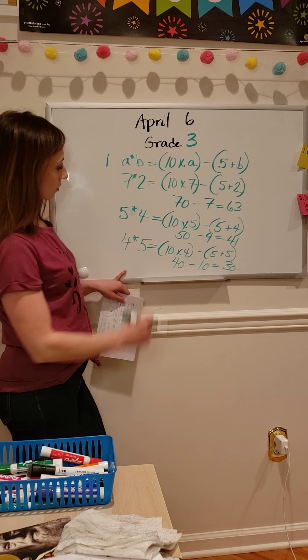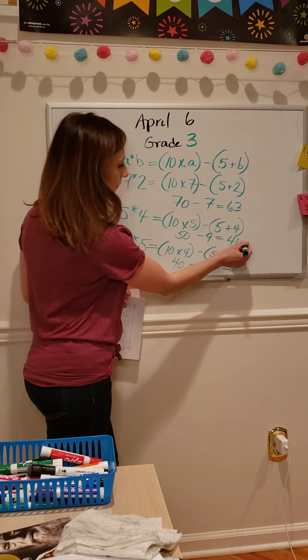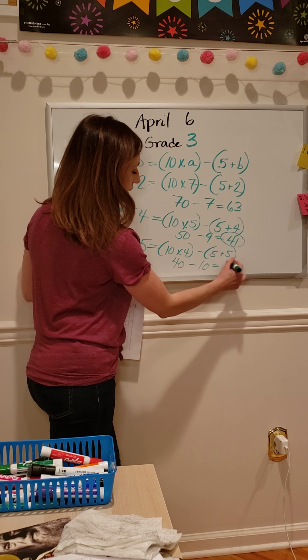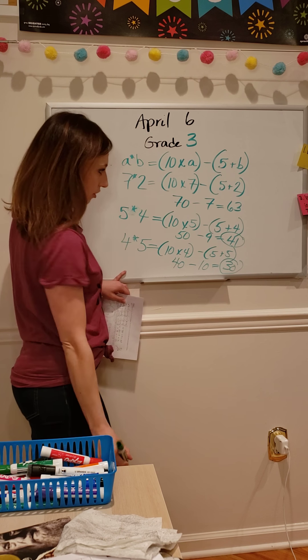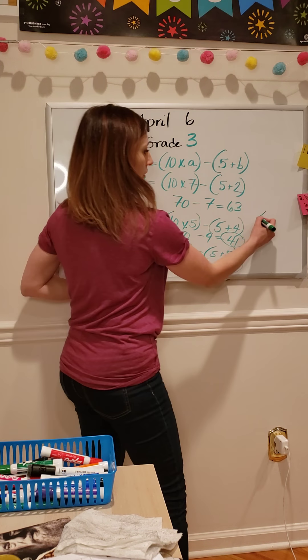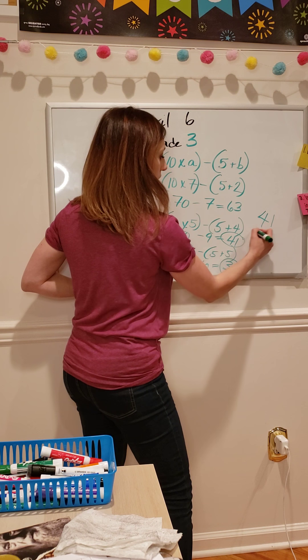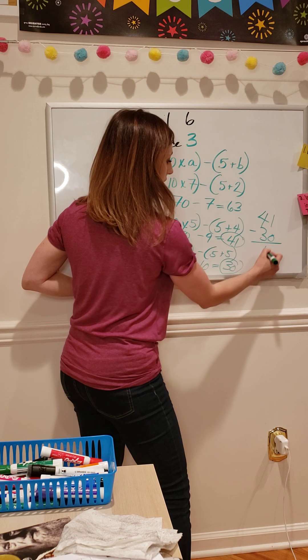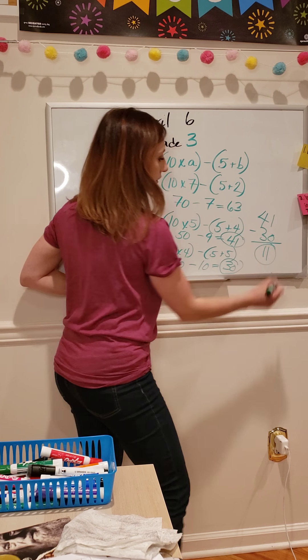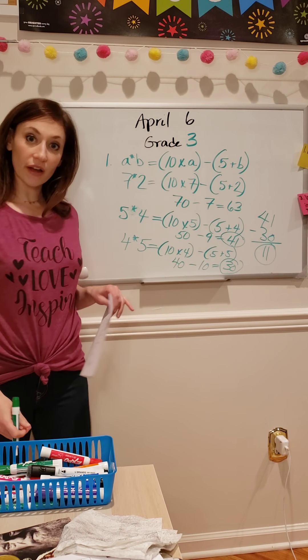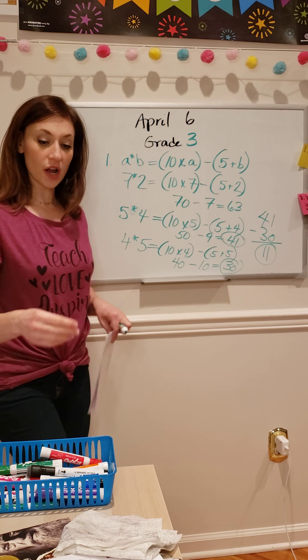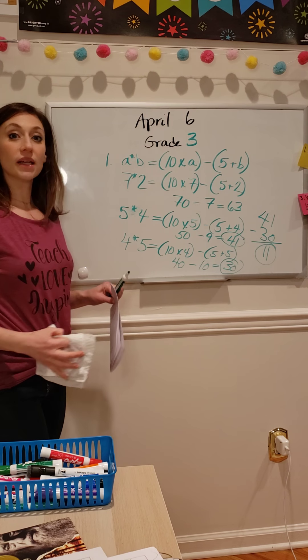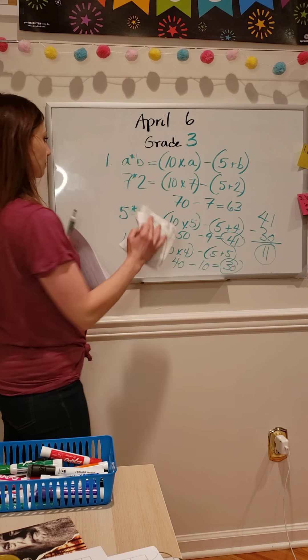But how much larger is 41 than 30? 41 take away 30 is 11. So my final answer for number 1 is 11.